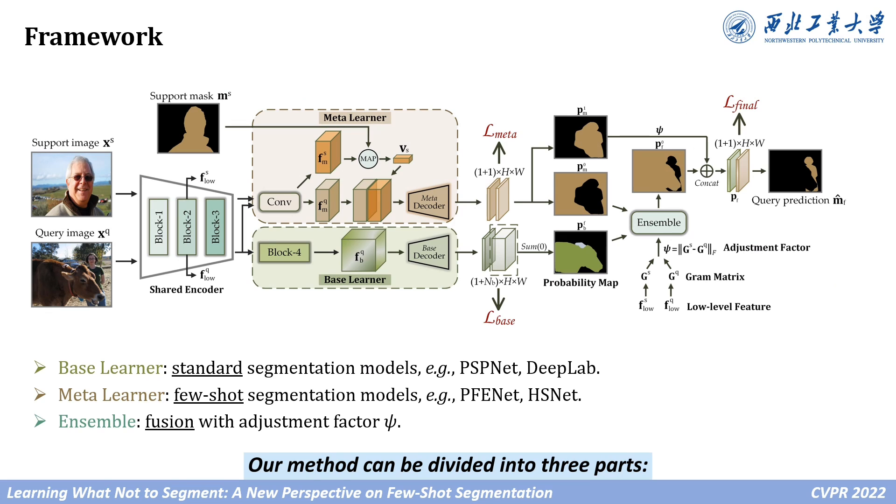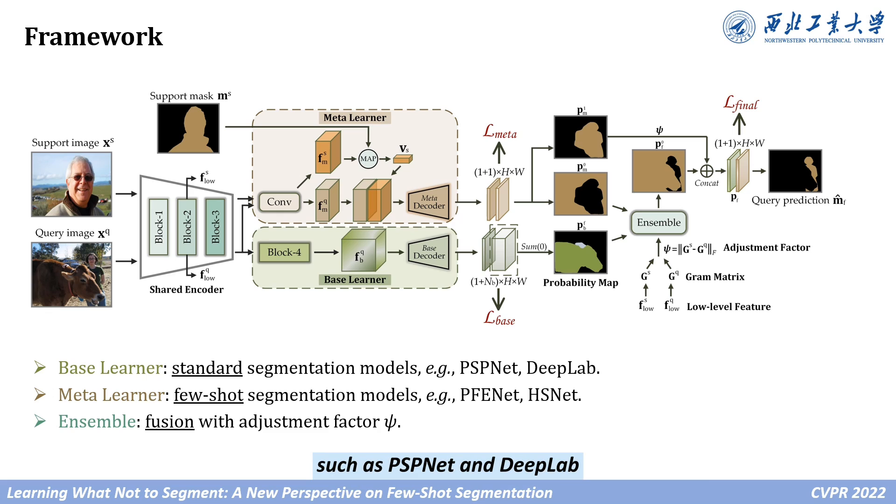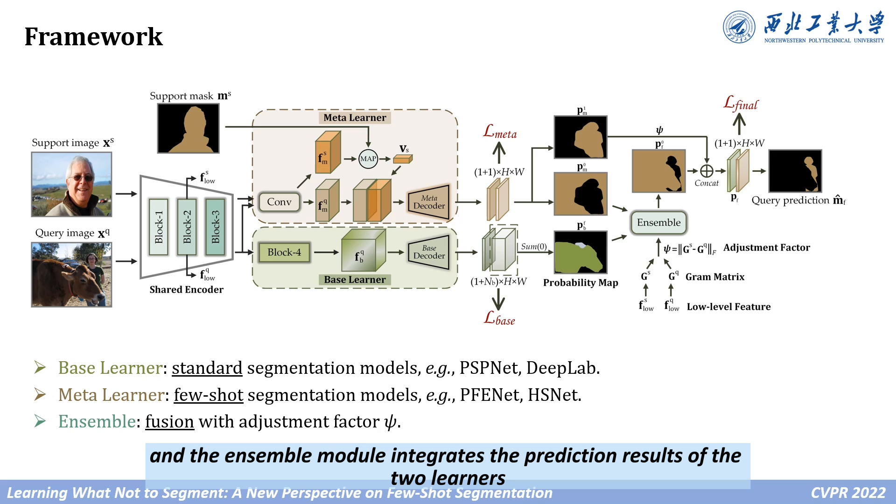Our method can be divided into three parts: base learner, meta learner, and ensemble module, where the base learner can be any traditional segmentation network, such as PSPNet and DeepLab. The meta learner represents the few-shot segmentation networks, such as PFENet and HSNet, and the ensemble module integrates the prediction results of the two learners.